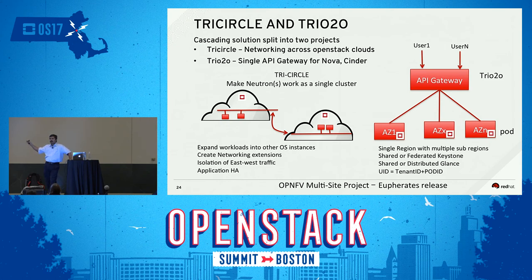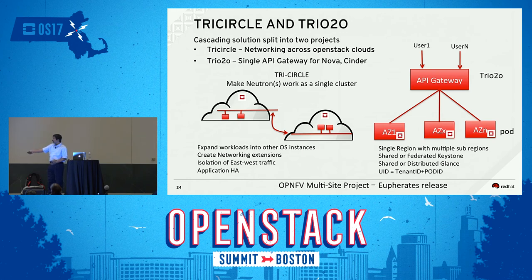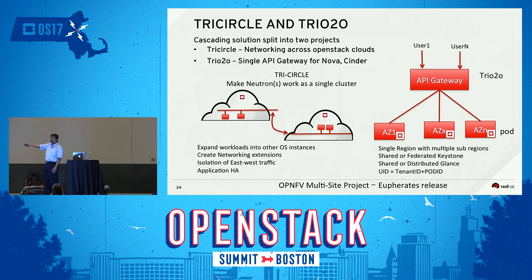Trio2.0 creates a common API gateway instead of per-site proxy APIs. This API gateway sits in front of users as a central management plane and provisions down into each data center modeled as an availability zone (AZ1 through AZN). The gateway creates a unique ID combining a tenant ID and a pod ID — because pods and tenants are finite and unique, you can provision any given workload through this API gateway into any OpenStack region.